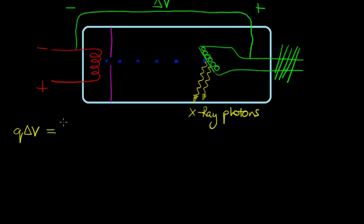The charge of a charged particle multiplied by the potential difference across which it travels is equal to Planck's constant multiplied by the frequency.